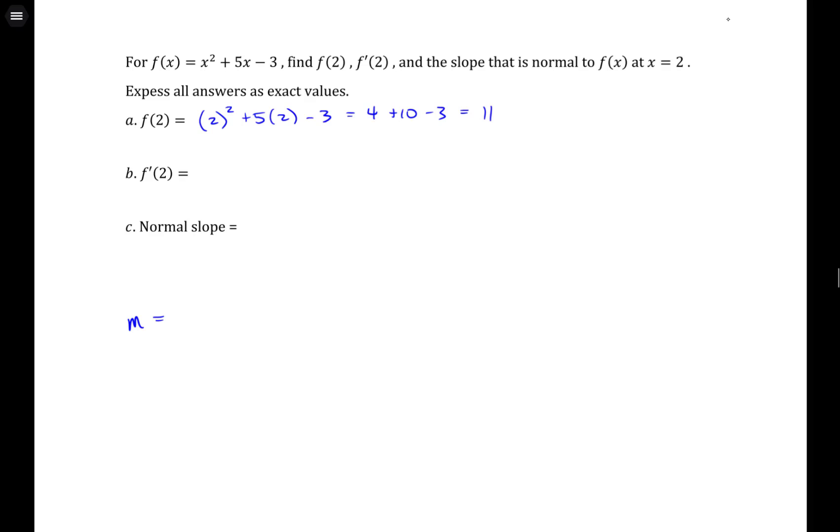So what we do is set up a function that calculates a secant line around a particular point. So y₂ is going to be the function itself minus y₁, which is the y-value of the point of interest, so 11, over x minus 2.